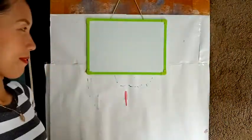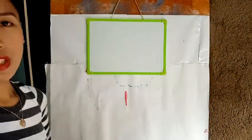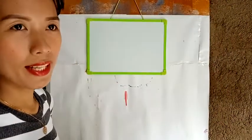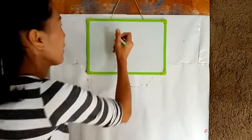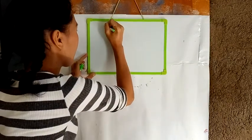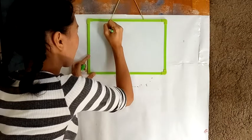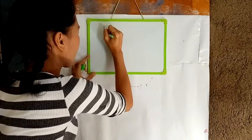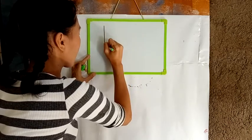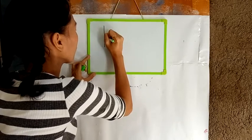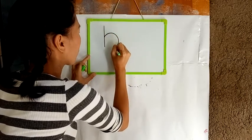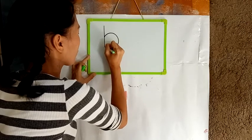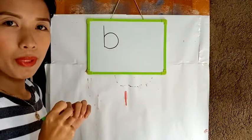Let's start. First, you will be drawing letter B — small letter B. Are you following?